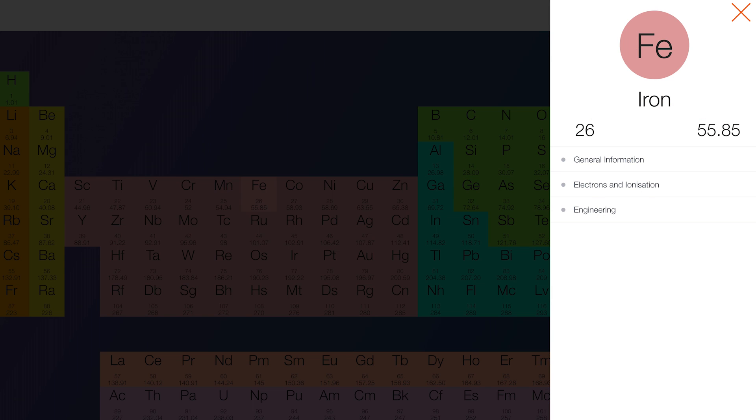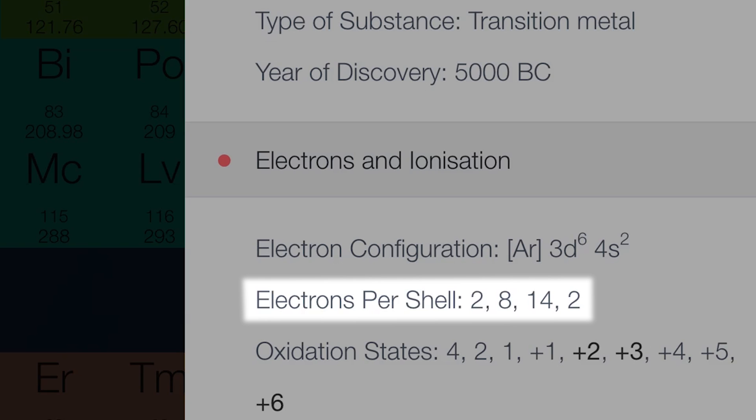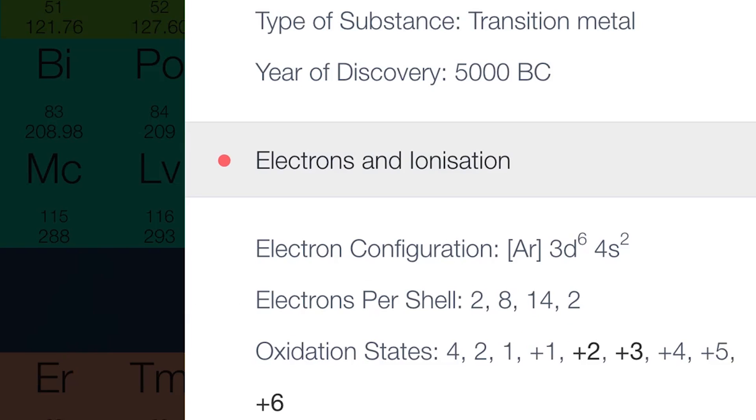Let's transition to iron, which has 2 electrons on its inner shell, 8 on the second, 14 on the third, and 2 on the outermost.